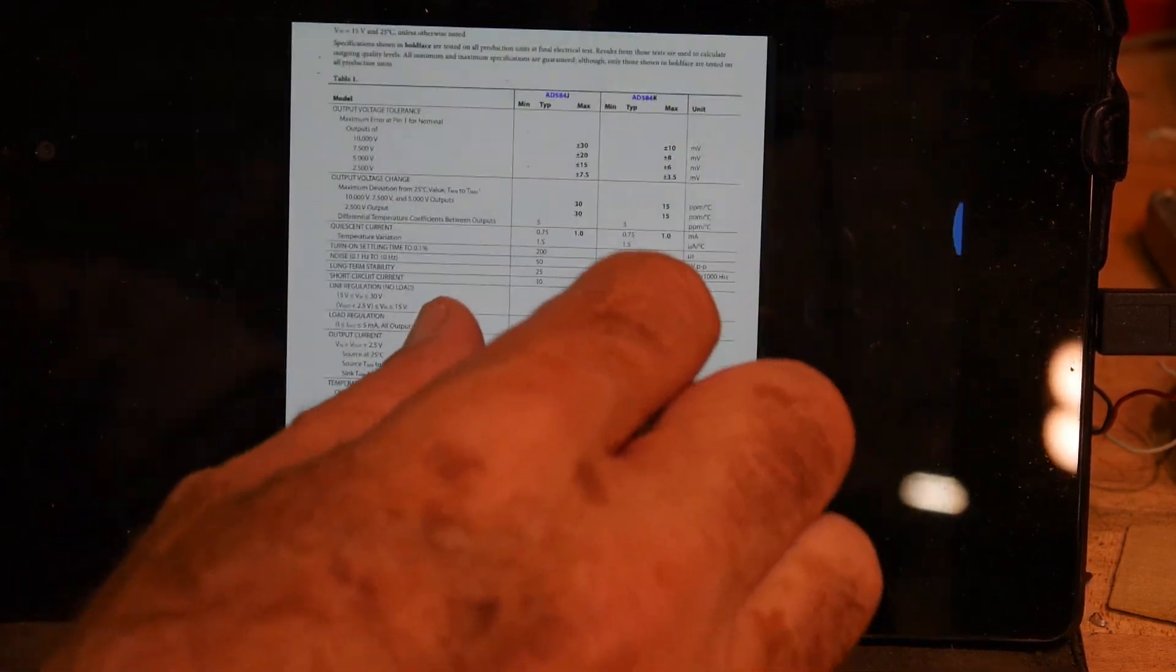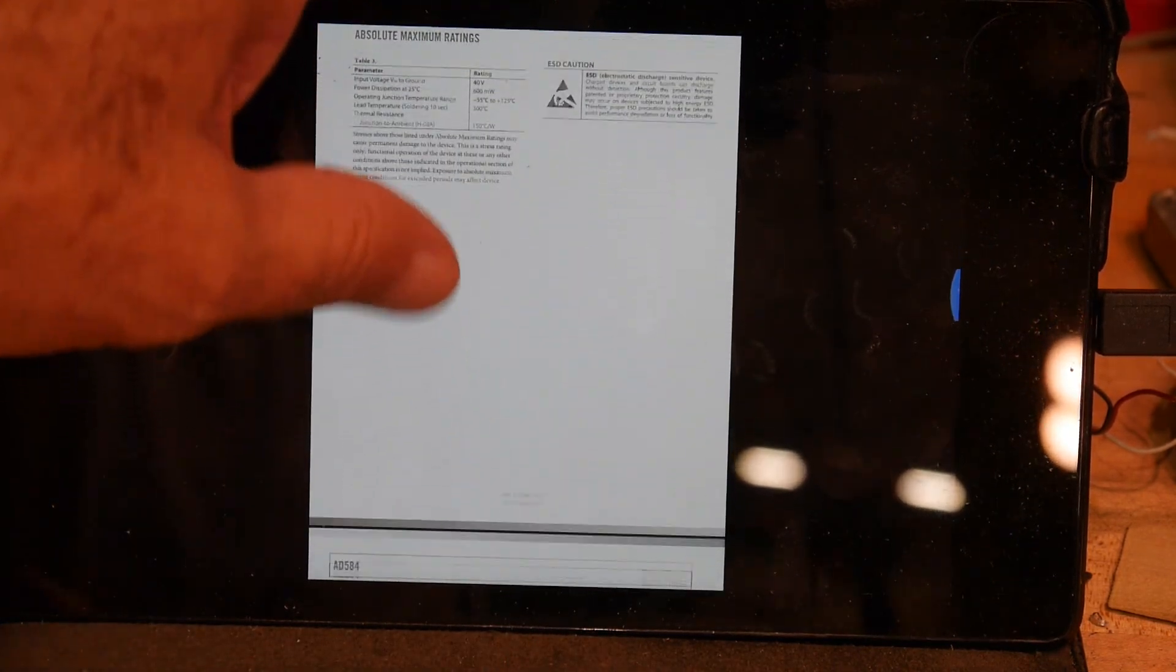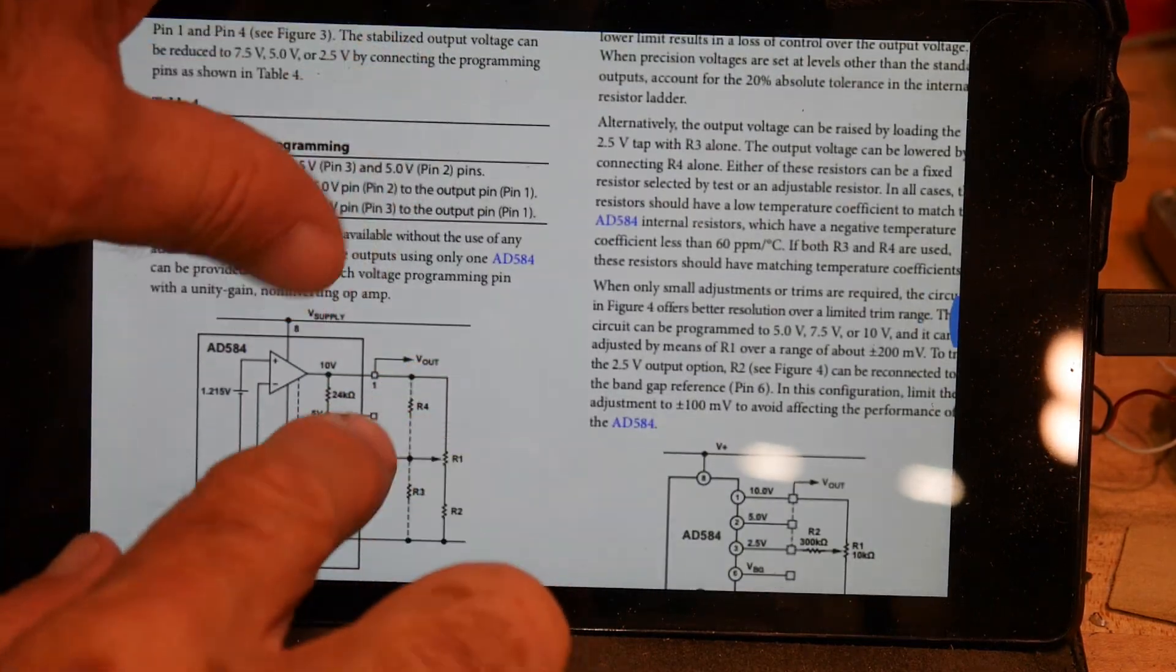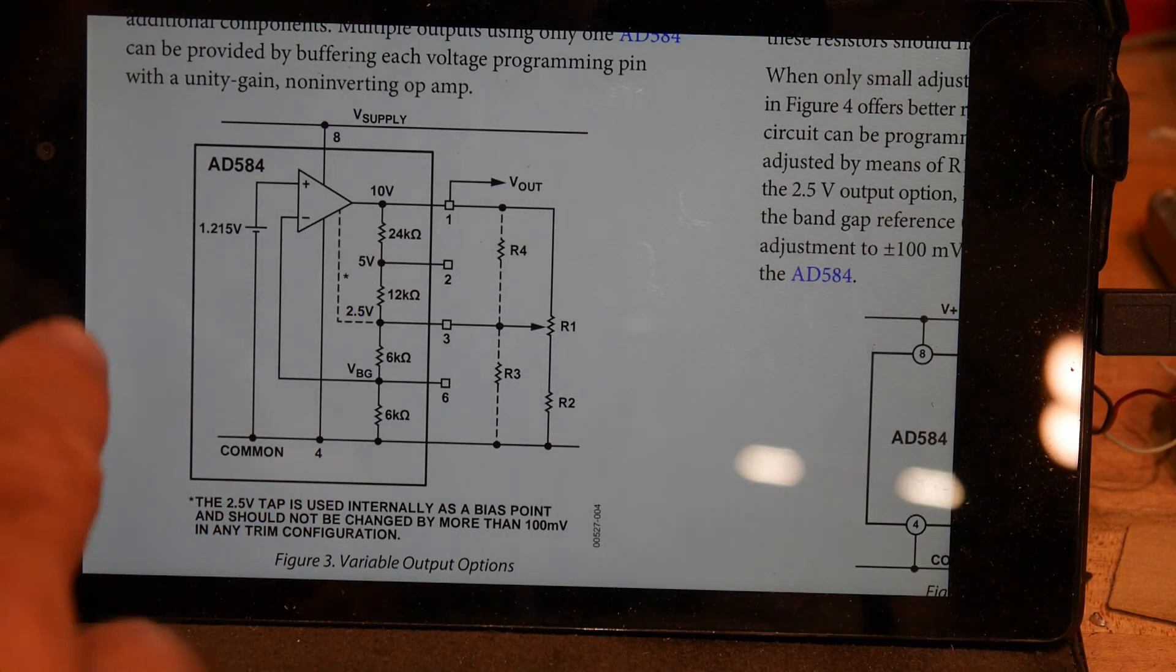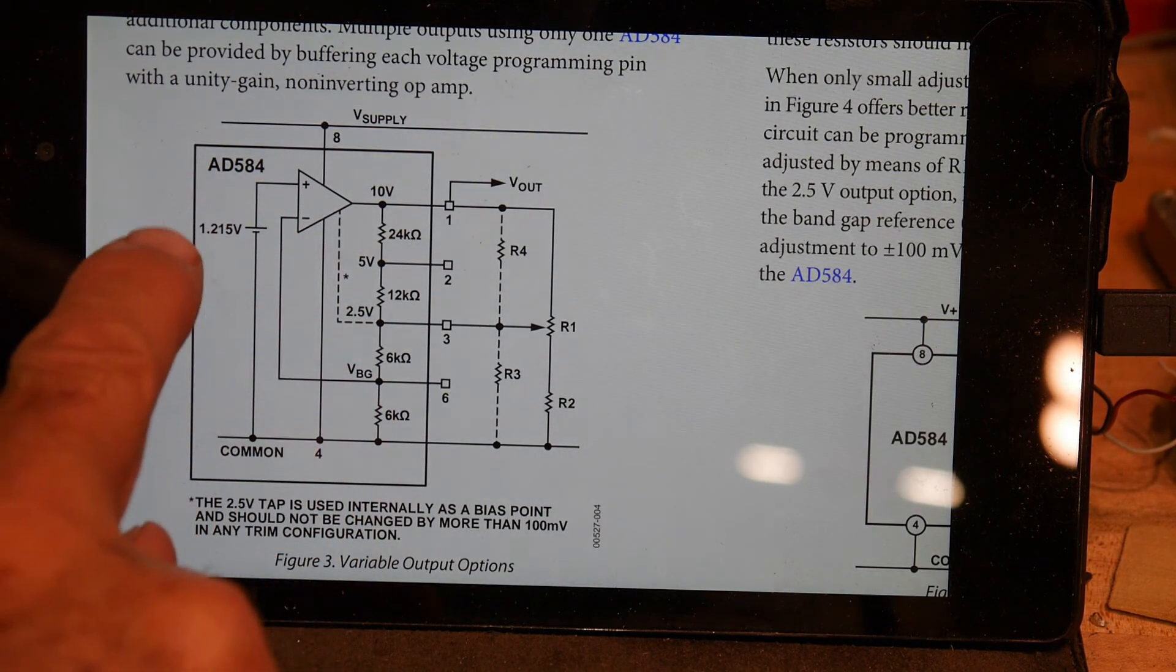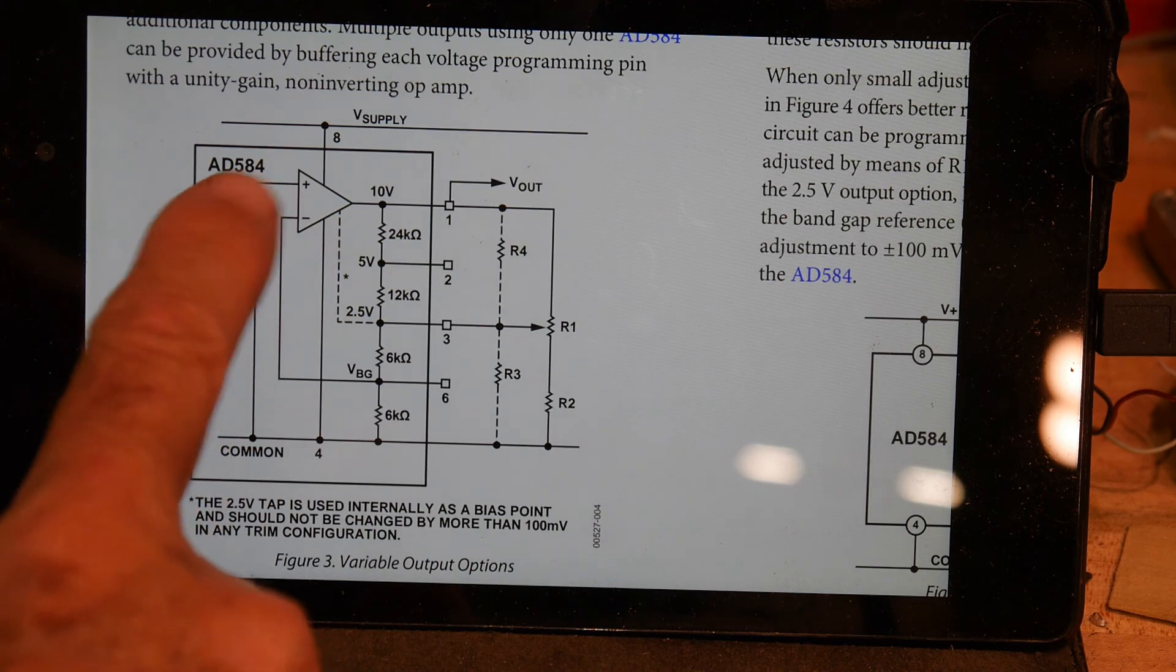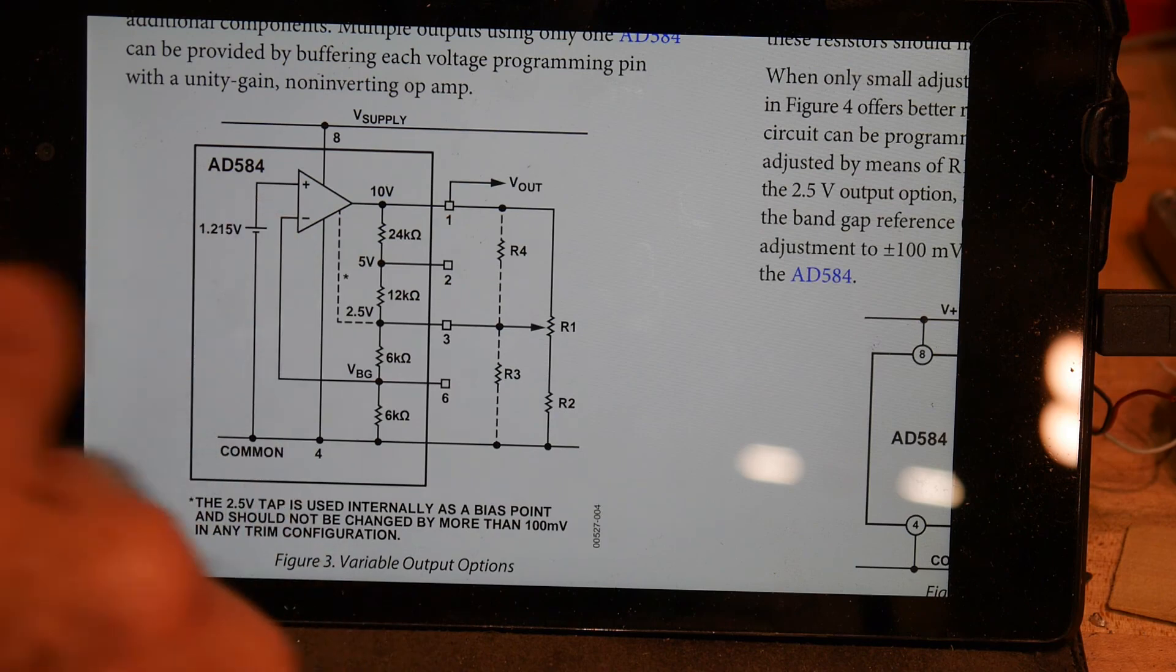But it is kind of clever in that, let's see, let's zoom down a bit. Internally it has a resistive divider. So its native voltage inside is 1.215. That's the reference that's in it. And then it amplifies that to exactly 10 volts, laser trimmed.